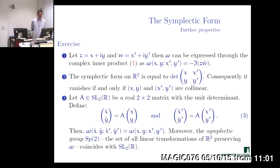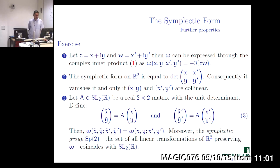Specializing to two dimensions, the symplectic form on two-dimensional vectors is simply the determinant of the 2×2 matrix constructed from the coordinates of the two vectors. Geometrically, the symplectic form vanishes when the vectors are collinear — whereas the usual Euclidean inner product vanishes for orthogonal vectors.